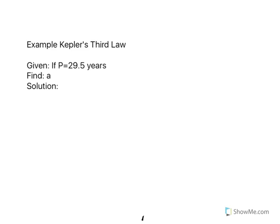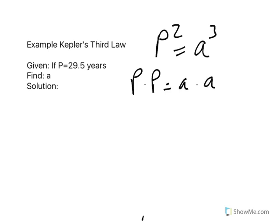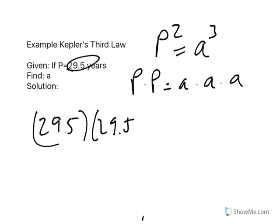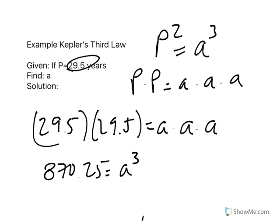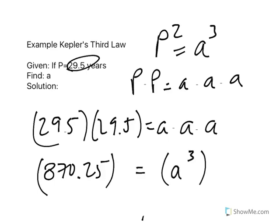Let's look at a third example. If the period of a planet is 29.5 years, what is its average distance from the sun, A? Using Kepler's third law: P times P equals A times A times A. Substituting, 29.5 times 29.5 equals 870.25, and that equals A cubed. To solve for A, we take both sides to the 1/3 power. A cubed to the 1/3 gives A to the 1, which is just A.